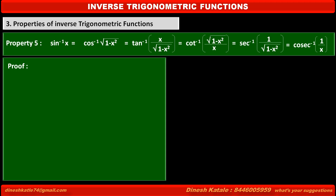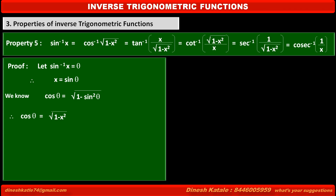See proof. Let sin inverse x is equal to theta. Therefore, we can write it as x is equal to sin theta. We know cos theta is equal to under root 1 minus sin square theta. Therefore, replacing sin theta by x, we get cos theta is equal to under root 1 minus x square. Therefore, we can write it as theta is equal to cos inverse of under root 1 minus x square.